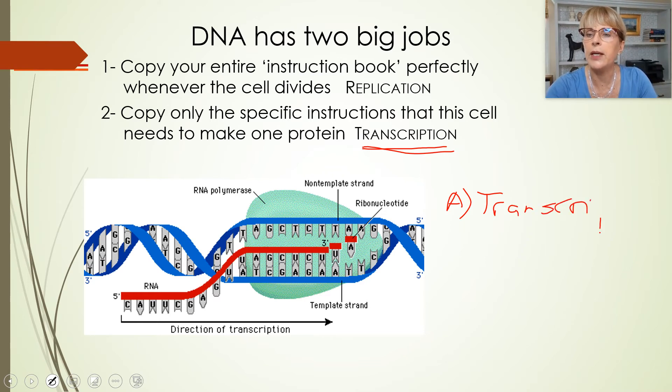But the other job that DNA has is called transcription, and transcription is the first step of a two-step process. Transcription is going to be making a copy of just one gene. So DNA has got, even one chromosome is made out of millions of base pairs. So that's a base pair, that's a base pair, that's a base pair.